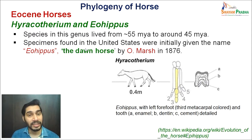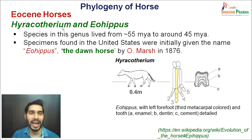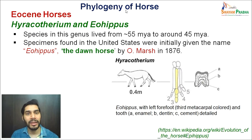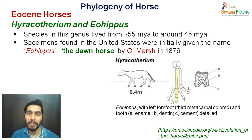The species found in the United States were initially given the name Eohippus, meaning 'dawn horse,' by Othniel C. Marsh in 1876. Eohippus and Hyracotherium actually represent almost the same organism from the phylogeny of horse. Their overall size was around 0.4 meter. The limb structure shows four toes in the forelimb, and the tooth structure resembles the brachydont kind with a very small crown.